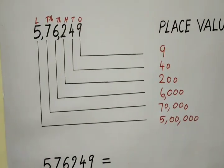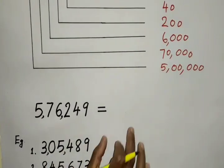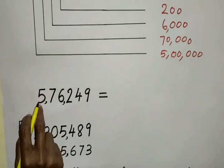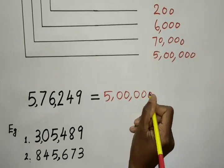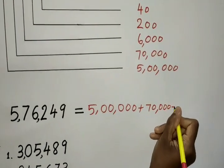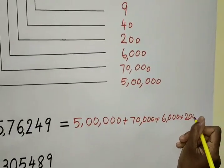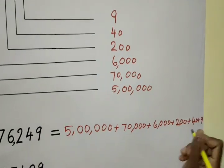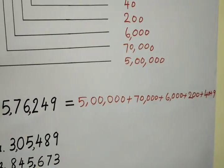Now we write 50,076,249 as the sum of place values of each digit. So 5,000,000 plus 70,000 plus 6,000 plus 200 plus 40 plus 9. This is the expanded notation or expanded form of this number.